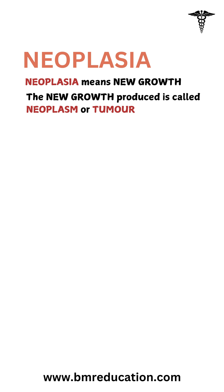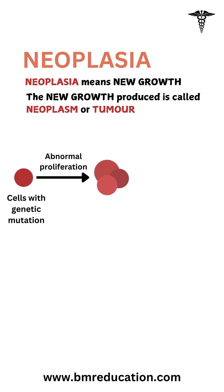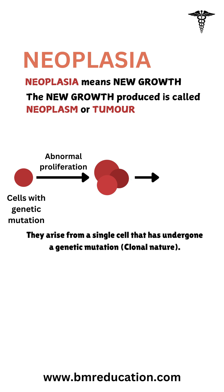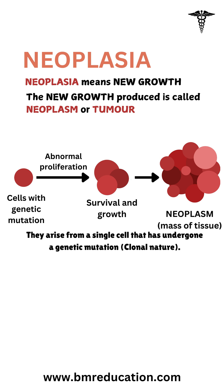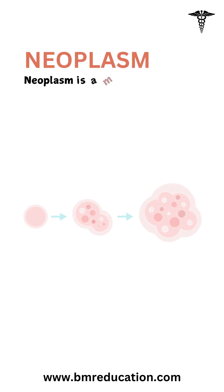Let's try to understand how they arise. Any neoplasm in the body arises from a single cell that has undergone genetic mutation or multiple mutations. Therefore, neoplasms are clonal in nature. Due to these mutations, these cells have an advantage of survival and growth, resulting in abnormal proliferation and producing a massive tissue called a neoplasm.